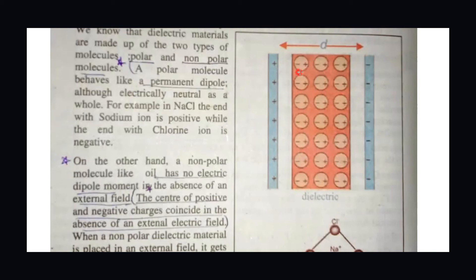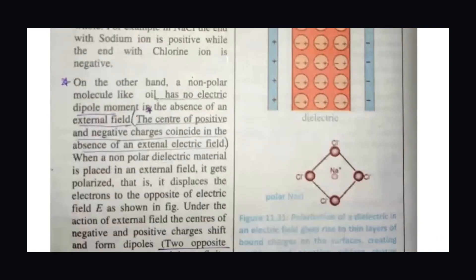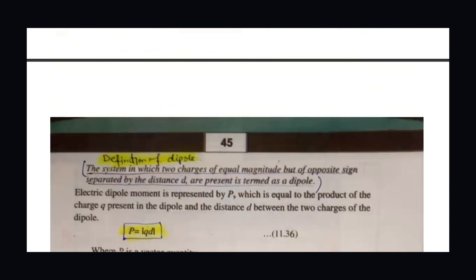So here, with the external electric field, there is a formation of poles — we call it a dipole. The system in which we have a dipole formation with some distance between the two charges is known as formation of a dipole. Finally, a dipole is defined as a system of two charges of equal magnitude but opposite sign, separated by a distance.